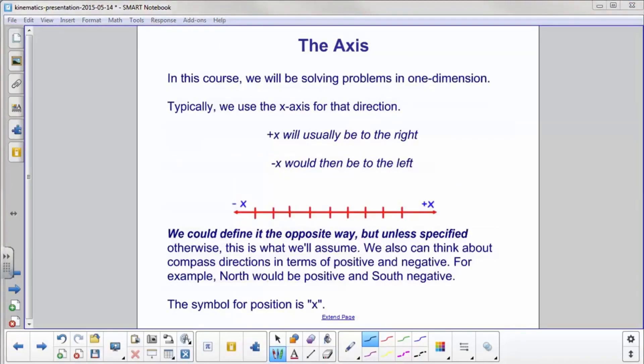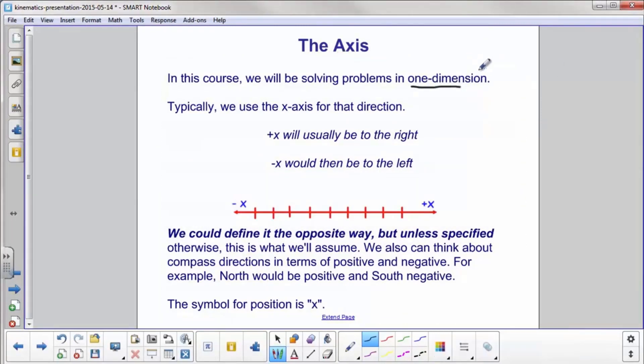For this algebra-based physics course, we're only going to be solving problems in one dimension. Typically, we're going to use the X axis, the horizontal axis. Plus X, positive X, will be defined as to the right. Negative X is going to be defined as to the left, just like the number lines you did in grade school. We could absolutely define it any way you want, but we're going to agree to use this convention. Positive is to the right and left is negative. Also, we could pretend we had a compass here. North would be positive, south would be negative, or east, which is to the right, would be positive, and west would be negative. The symbol for position is going to be X. Later on in physics, when you do two and even three dimensions, then we will use Y and Z. But for now, we just need to use X.